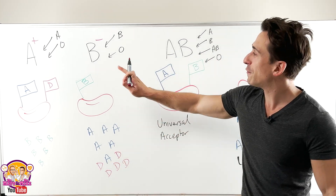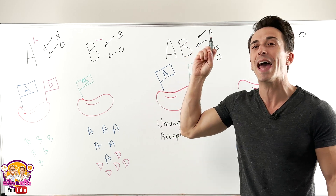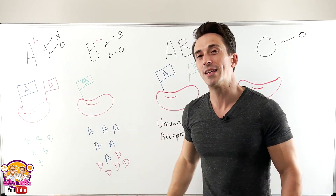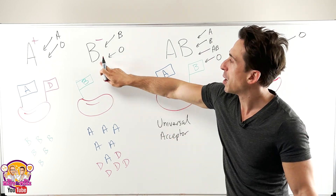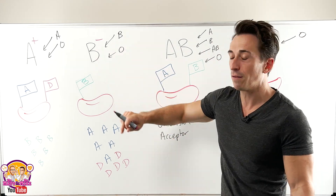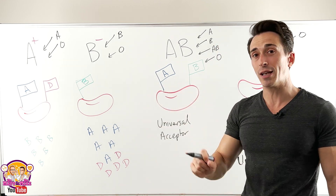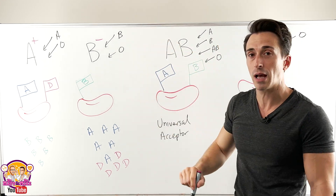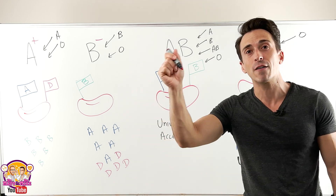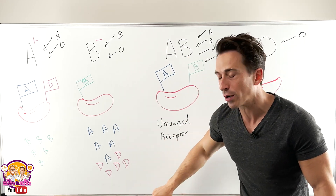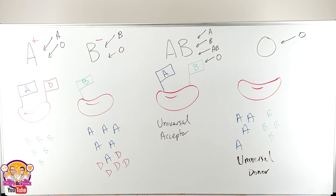If you have a negative blood type, you cannot receive anything with the D flag — meaning you cannot receive positive blood of any kind. For example, B negative can only receive B negative blood and O negative blood. It cannot receive B positive or O positive blood because those carry the D flag and antibodies will be created against it. This has been a quick run through of the ABO blood types.